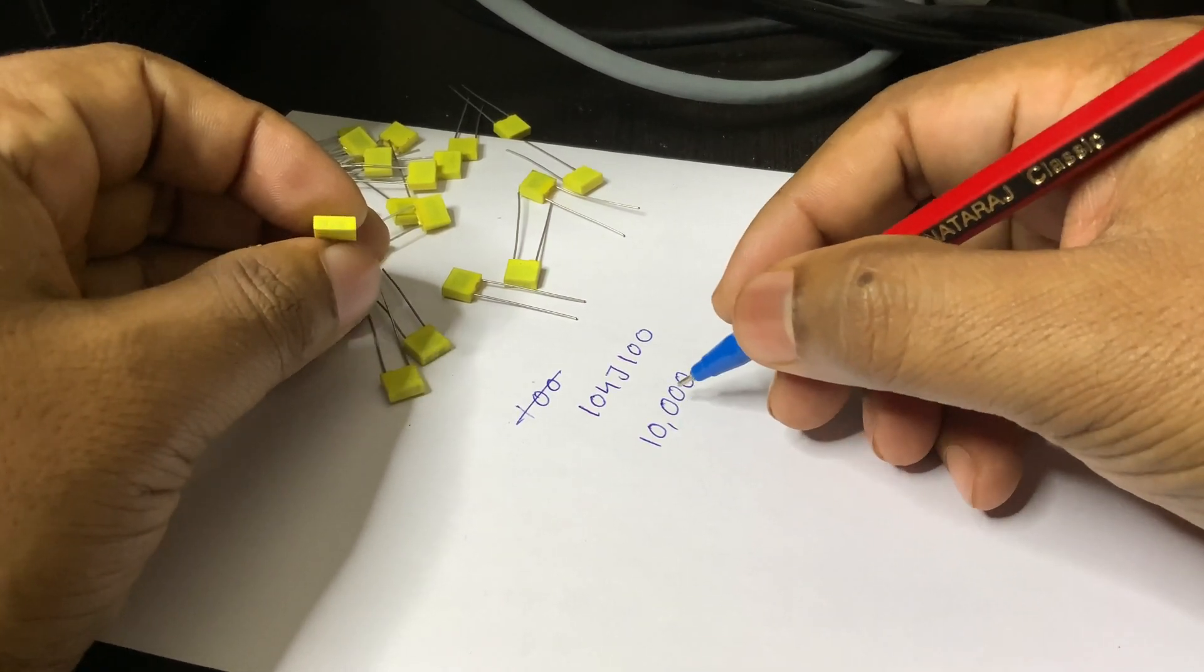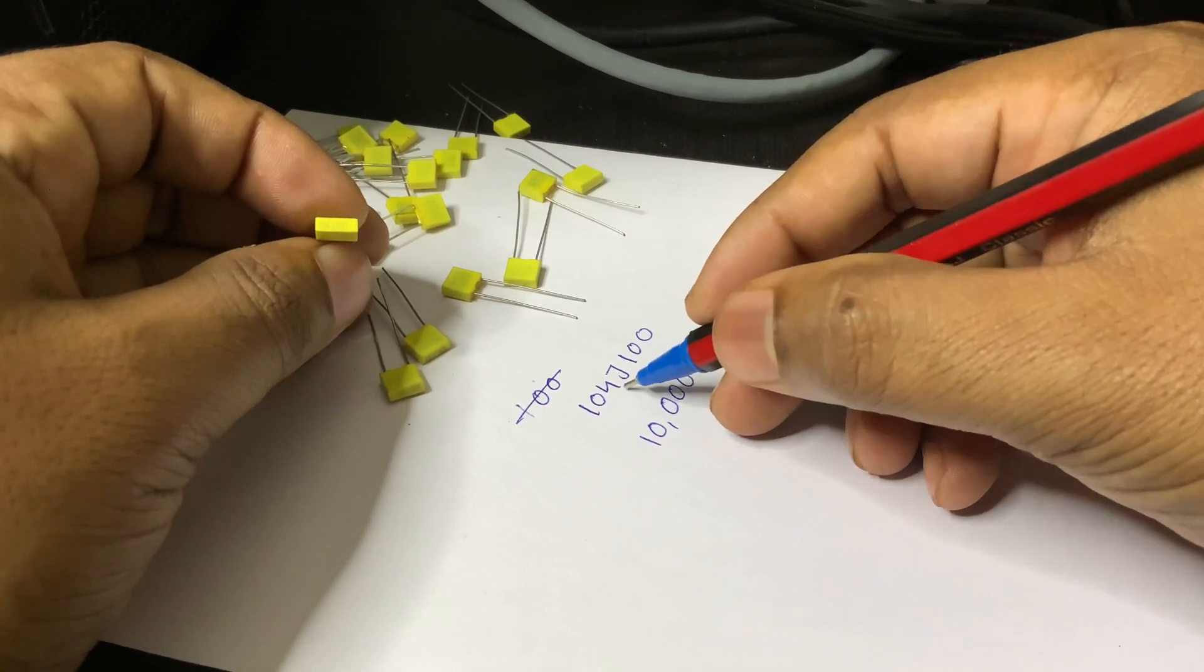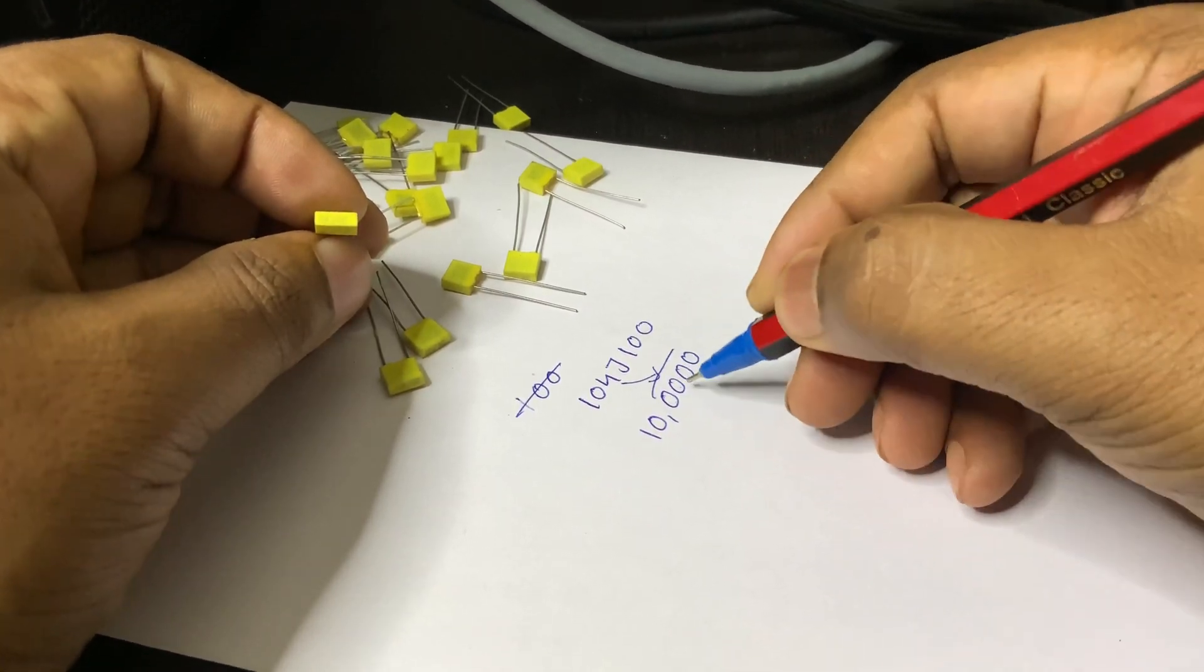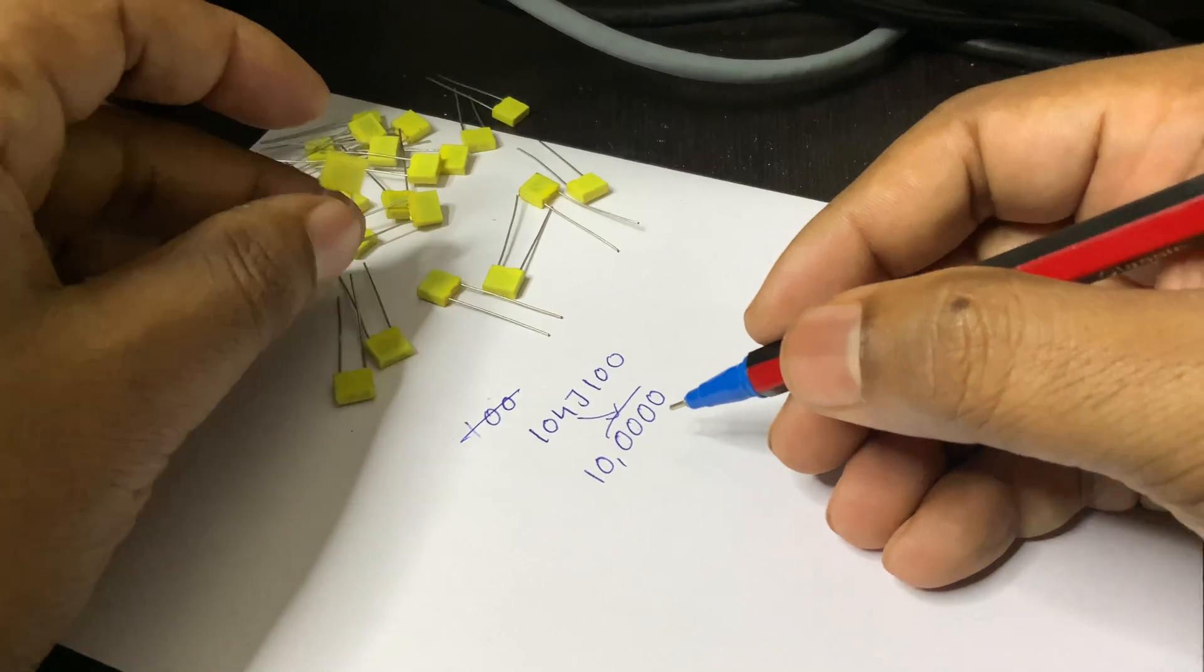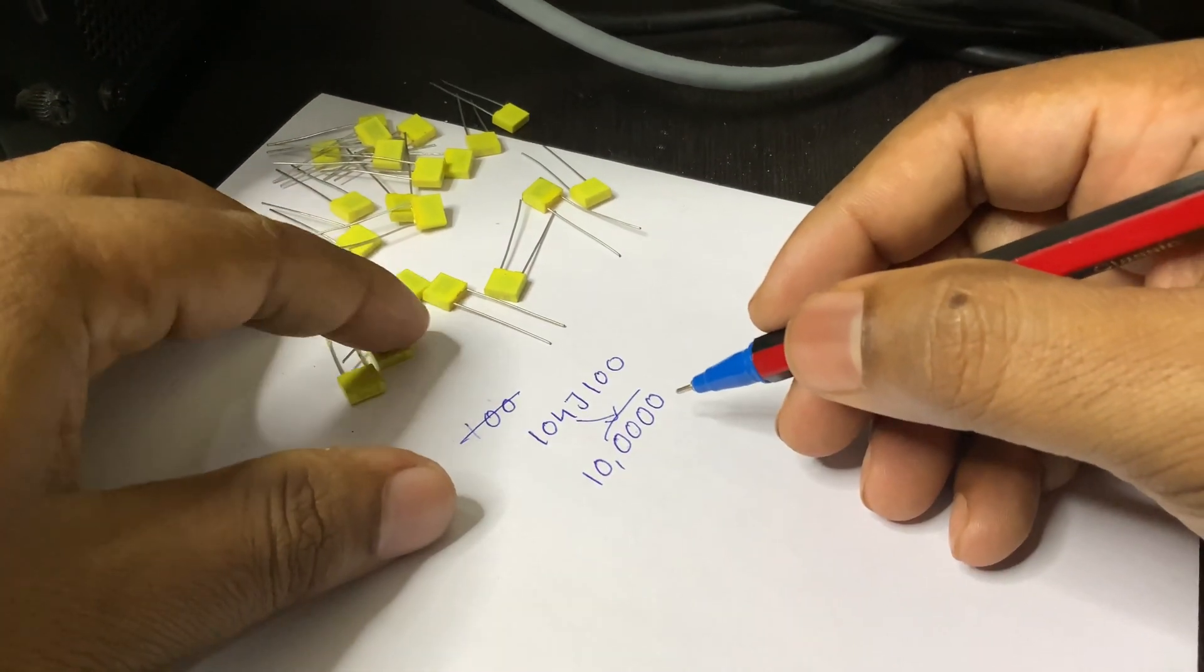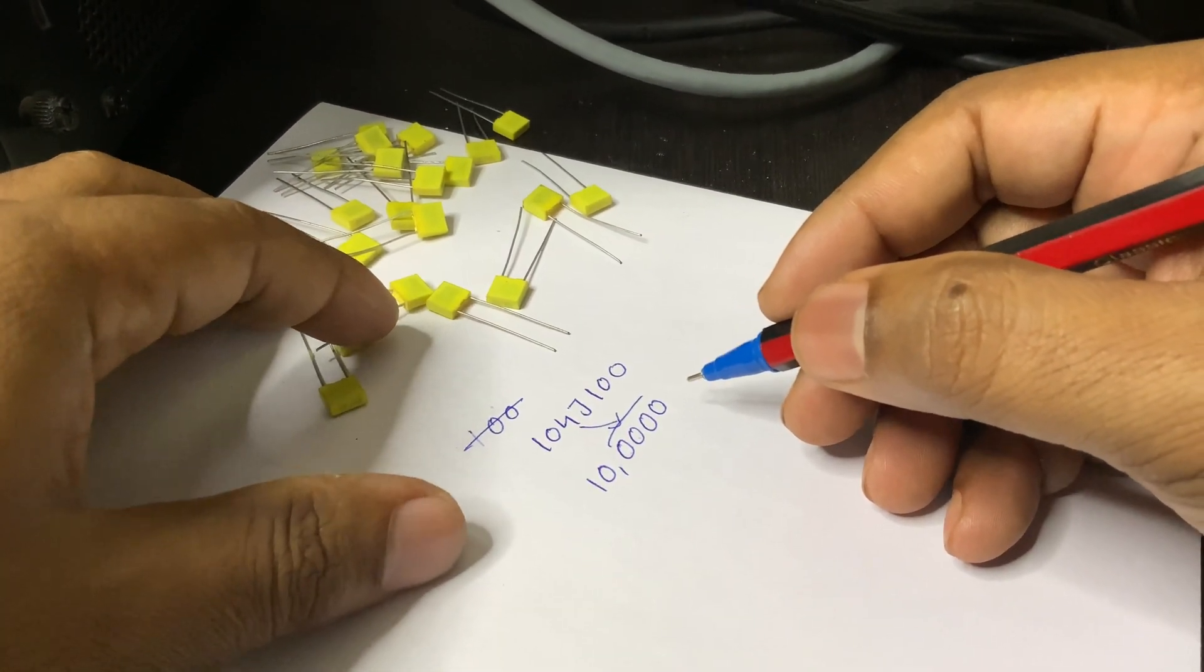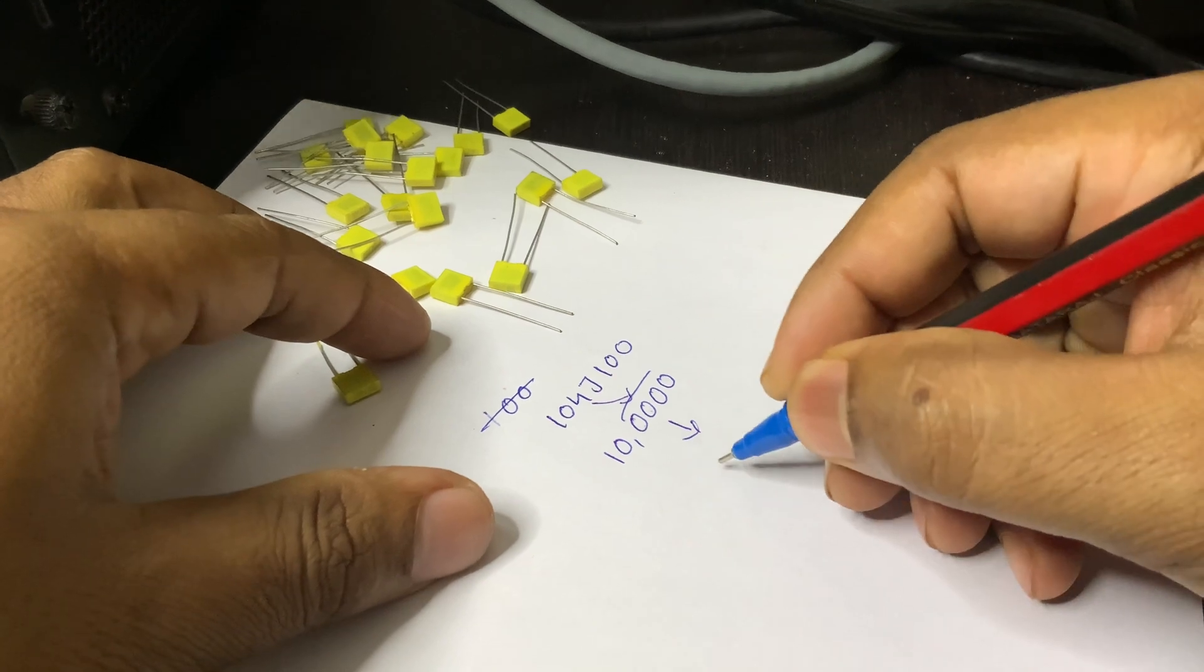The letter J represents the tolerance, which means the actual value can vary by 5% from the stated value. This tolerance level is acceptable in many general-purpose electronic applications, where precise capacitance is not critical.